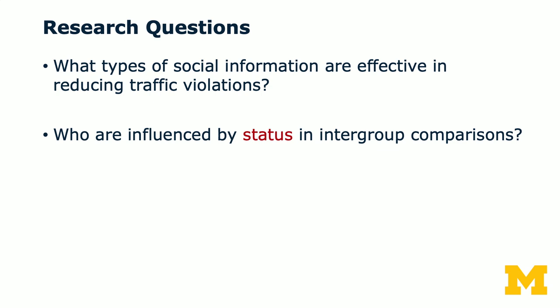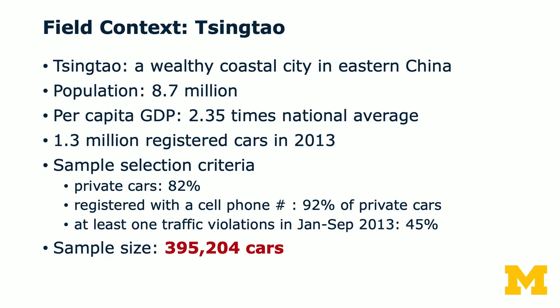The field context is the city of Qingdao, which is a wealthy coastal city in the eastern part of China — some of you might have heard of Qingdao beer. It had a population of 8.7 million people, and its per capita GDP is about 2.4 times the national average. In Qingdao, there were 1.3 million registered cars in 2013, which is when we worked with the Qingdao Police Department.